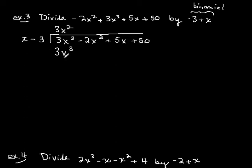What times x gives me 3x cubed? Well, 3x squared times x gives us 3x cubed. So you figure this number out using the first term, and then the second term just gets multiplied by 3x squared — it comes along for the ride. We take 3x squared times minus 3, and we get minus 9x squared.